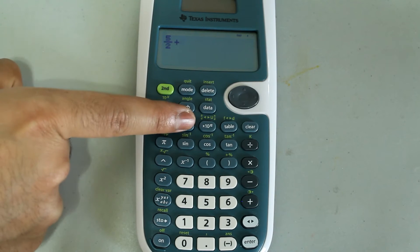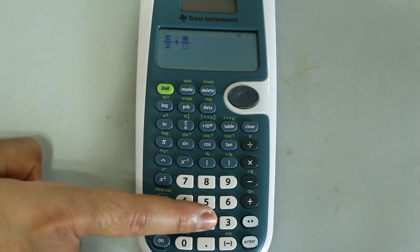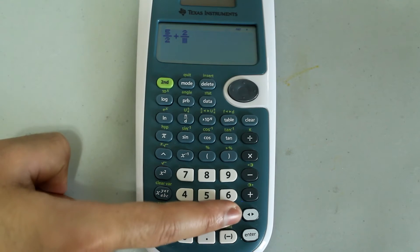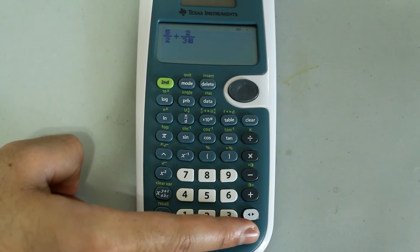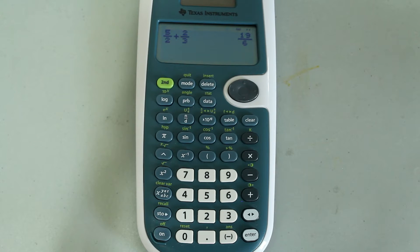And now I'm going to press N over D once more, and this time I'm going to type in 2 thirds. So 2, and then down arrow, and 3, and then I'm going to press enter, and I get the answer in fraction form.